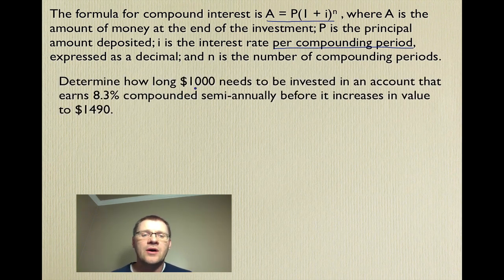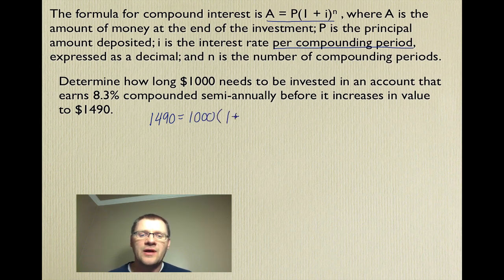So here's our example. It says determine how long $1,000 needs to be invested in an account that earns 8.3% compounded semi-annually, so twice a year, before it increases in value to a total of $1490. So plugging those numbers into our equation, we get 1490 which is how much we get at the end, equals 1,000 which is how much we put in right at the beginning, times 1 plus, this is 8.3%, it needs to be expressed as a decimal.